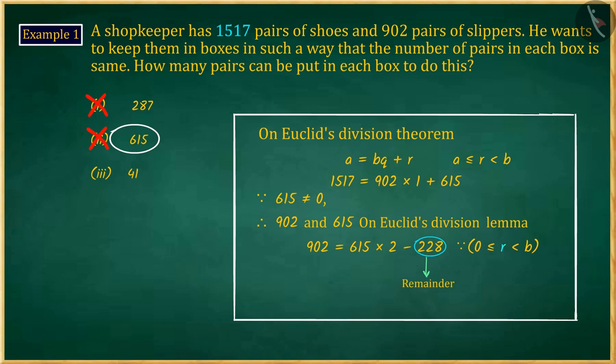It is either greater than or equal to 0. In this procedure, we don't get 0 as the remainder value, which we also ignore. For this reason, you consider 615 as the HCF of 1517 and 902. Hence, your answer becomes wrong.